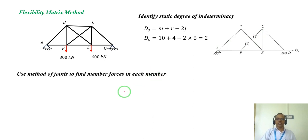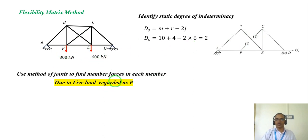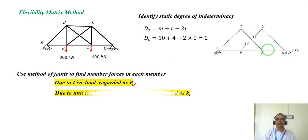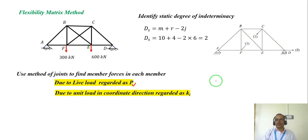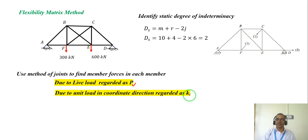There are two things here: first, finding the member forces due to the live load — say 300 and 600 kilonewtons — which we regard as P forces. Second, finding the member forces due to the unit forces in the coordinate directions, which we regard as Ki's — K1 and K2 — representing member forces due to unit forces in each coordinate direction.